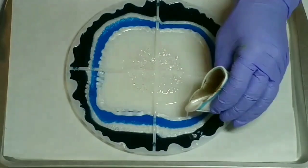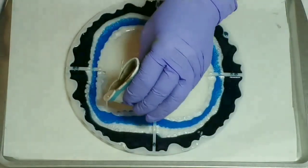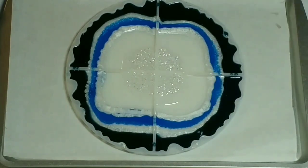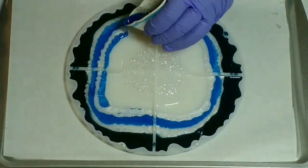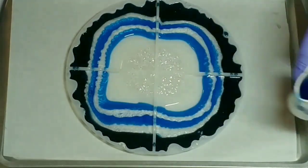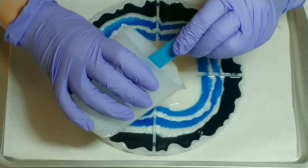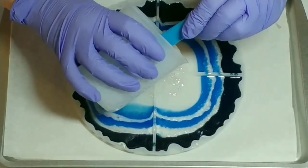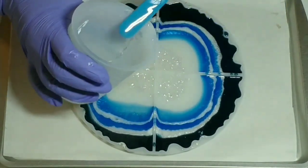And then we'll just continue with the colors. So here again, I'm adding the white. Now we'll just add a little bit more of the clear resin just to push out the colors a bit.